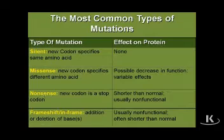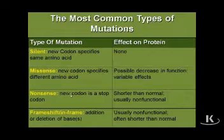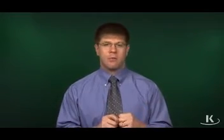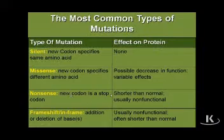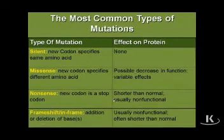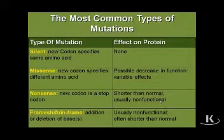In a nonsense mutation, the new codon is a stop codon — one of the three: UAG, UGA, or UAA. The protein is usually shorter than normal because protein synthesis stopped early, and it's usually non-functional. It's non-functional because a shortened protein is missing some of its sequence, causing folding to happen in a bizarre way that probably alters function.